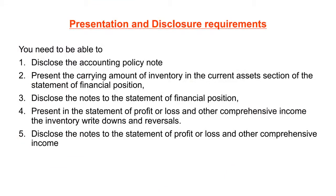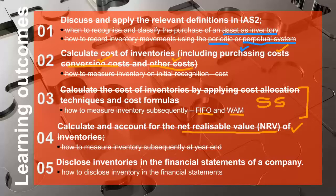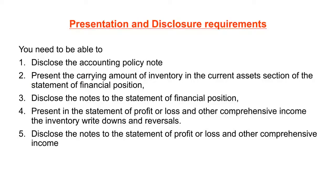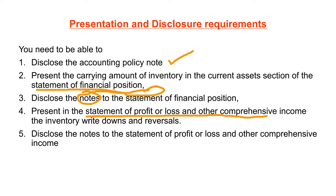Now we go on to the last objective: disclosure and presentation of inventory. We're going to look at the accounting policy note, the statement of financial position and its inventory note, and the statement of profit and loss and its related note — in that order.